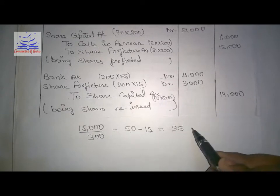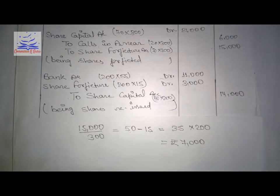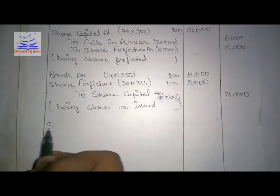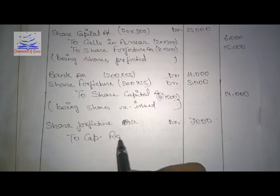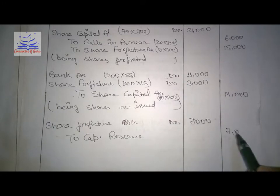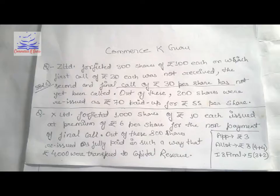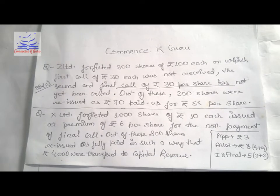So the capital reserve will be ₹35 per share into 200 shares, which gives ₹7,000 transferred to capital reserve. Now we will see the second question, in which we will understand how to handle forfeiture and reissue when there is a case involving security premium.